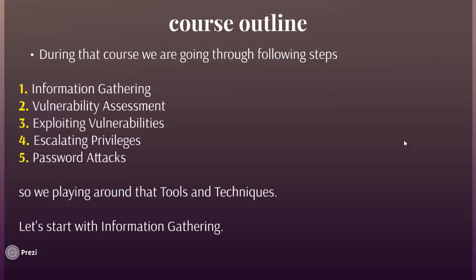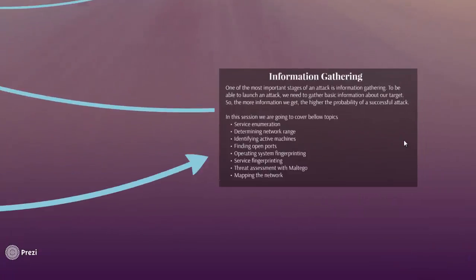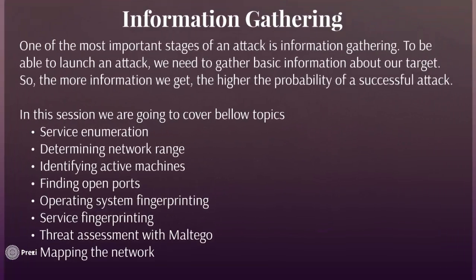We'll be playing around with those tools and techniques. Let's start with information gathering — one of the most important stages of an attack. To be able to launch an attack we need to gather basic information about the target. The more information we get, the higher the probability of a successful attack. In this session we are going to cover: service enumeration, determining network ranges, identifying active machines, finding open ports, operating system fingerprinting, service fingerprinting, threat assessment with Maltego, and mapping the network.